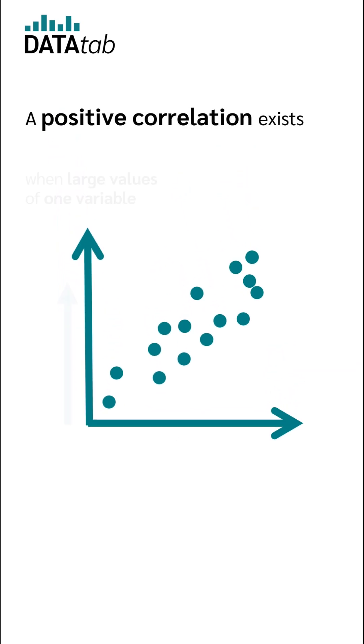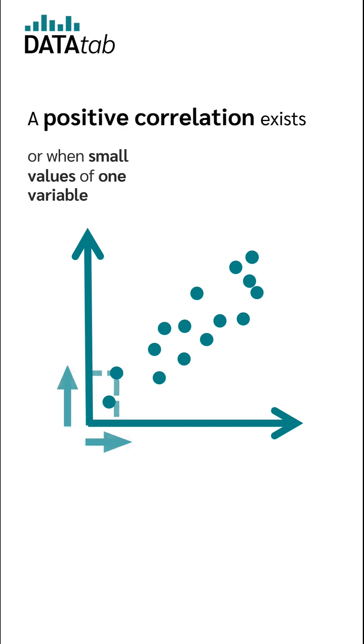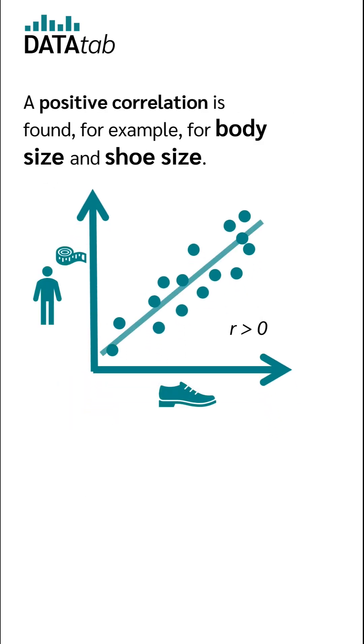A positive correlation exists when large values of one variable go along with large values of the other variable, or when small values of one variable go along with small values of the other variable. A positive correlation is found for example for body size and shoe size. The result is a positive correlation coefficient.